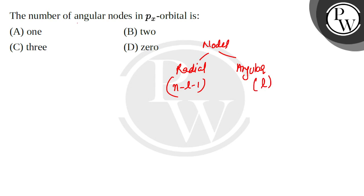So what do we ask? The angular node is asked. Which orbital? Px. So we know that the px is a p orbital.